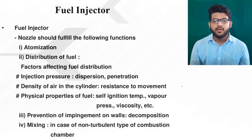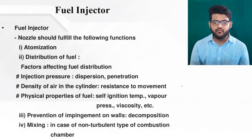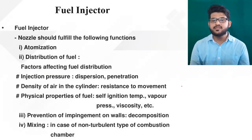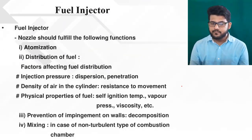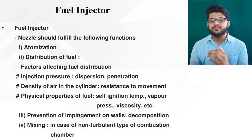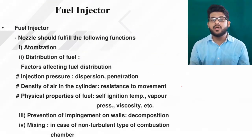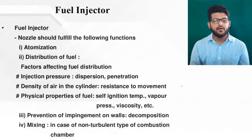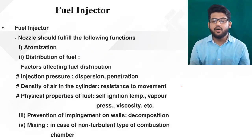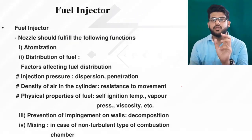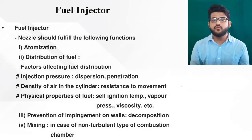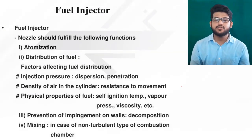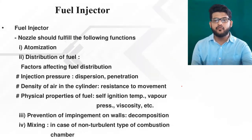Factors affecting fuel distribution include: injection pressure, which influences dispersion and penetration; density of air in the cylinder, which provides resistance to movement; and physical properties of the fuel such as cetane number, self-ignition temperature, vapor pressure, and viscosity. A third function is prevention of impingement on walls or decomposition — fuel should not remain inside the nozzle. A fourth function is mixing: in non-swirl type combustion chambers, proper mixing of fuel with air reduces ignition delay.